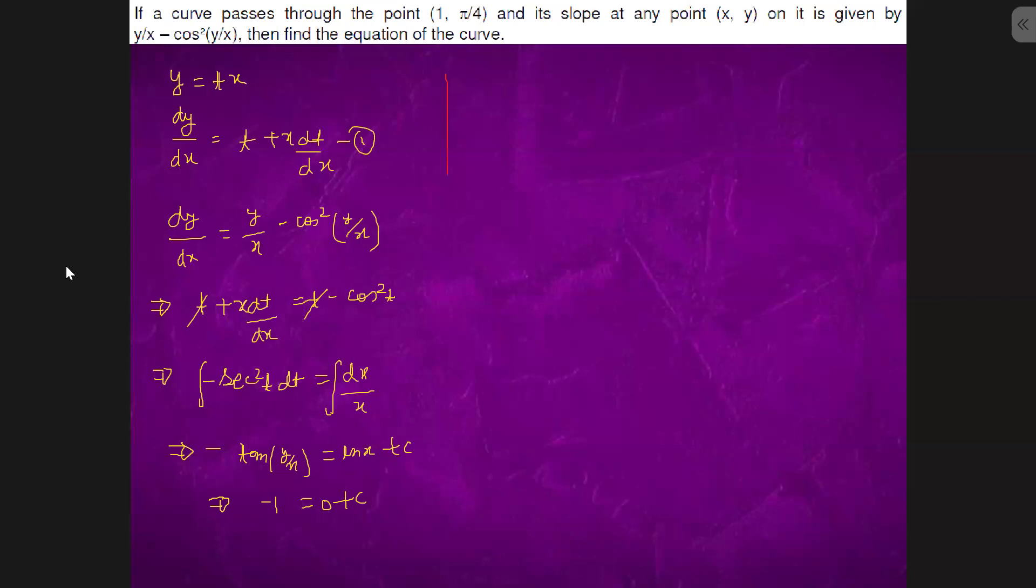So we have minus tan y by x equals to ln x minus one. This is the solution. So it is absolutely true.